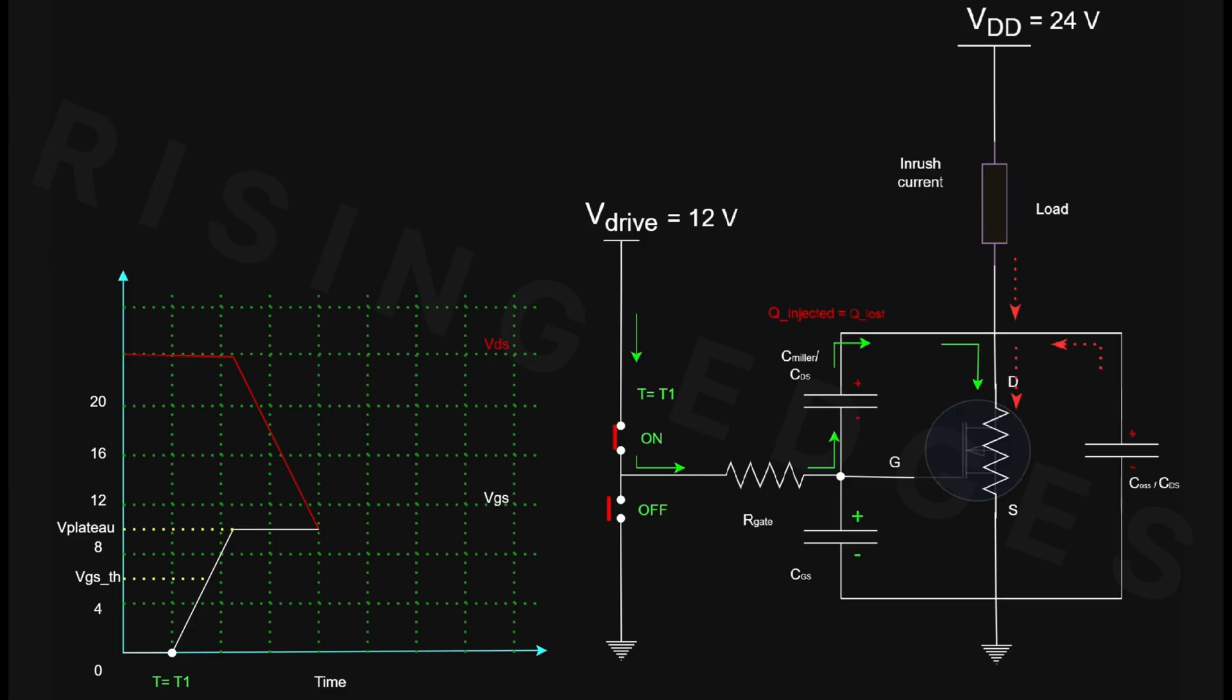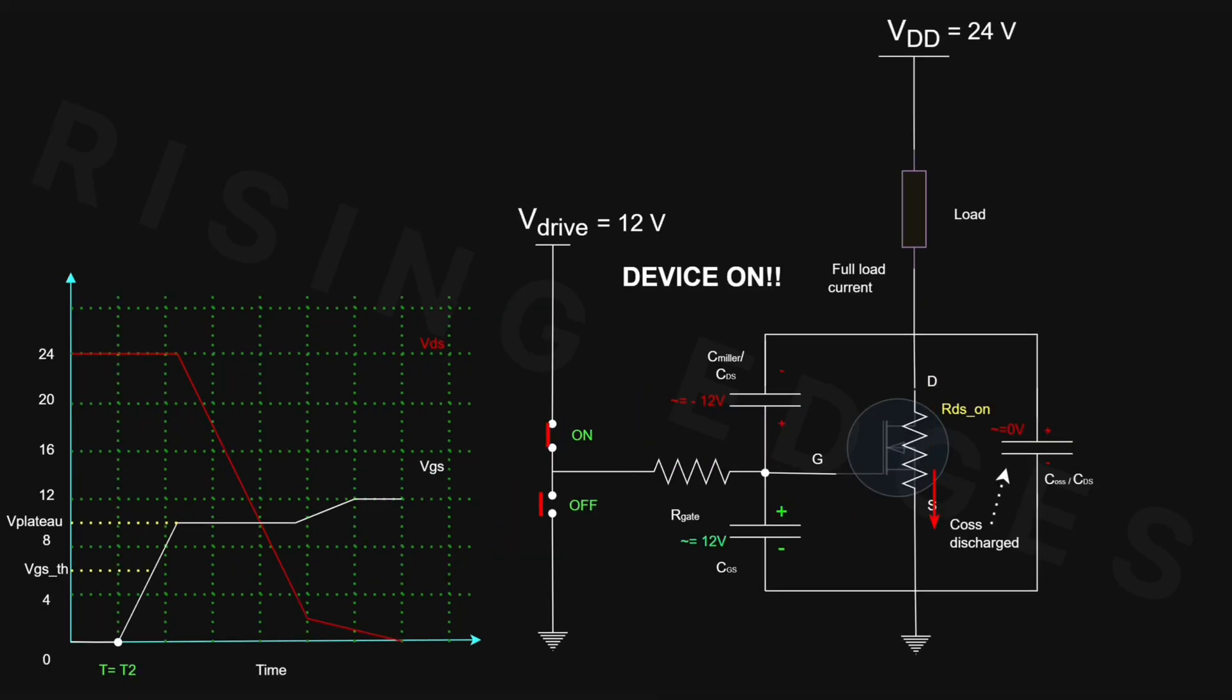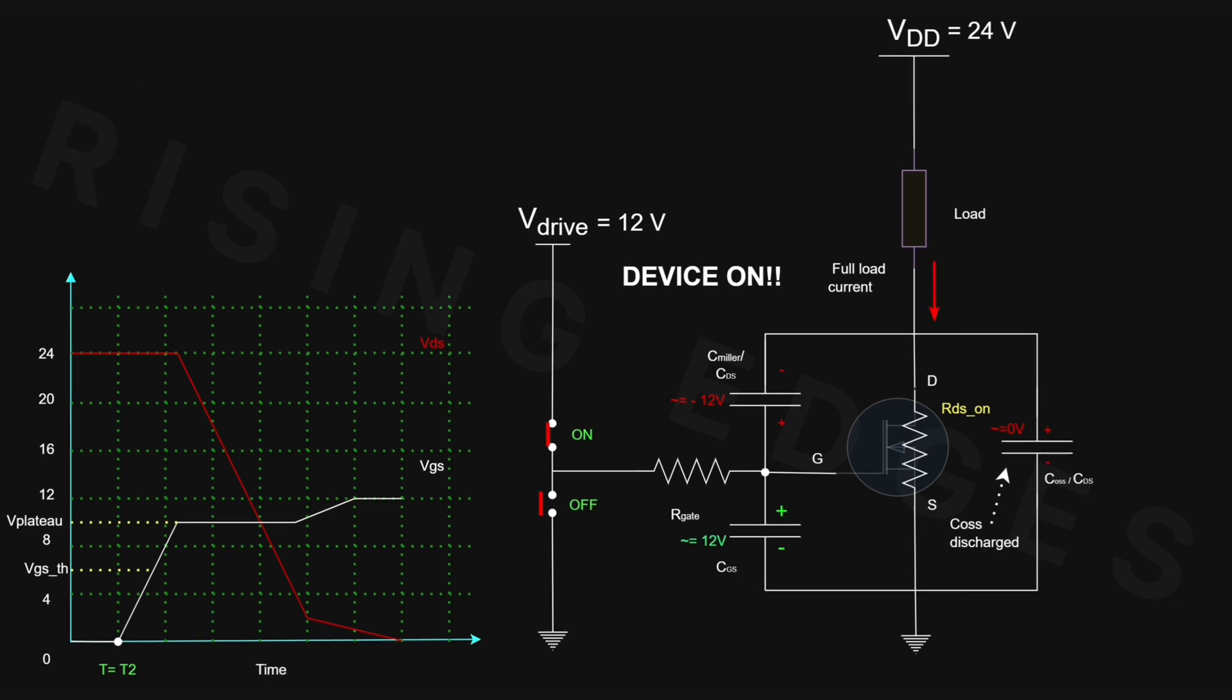Eventually, the drive current resumes charging the CGS fully and the VGS rises to the full V-drive level. And there you have it. The MOSFET is fully switched on and ready for action. There is just one more point to note. The polarity across the Miller capacitor CGD actually reverses before and after turn on.